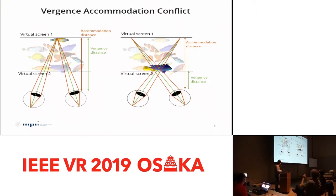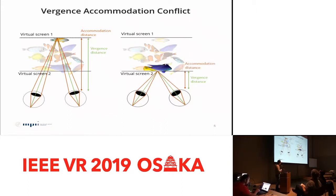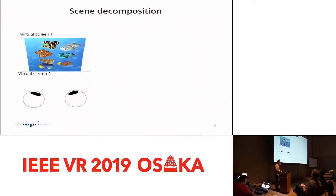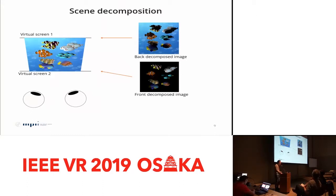One way to solve this problem is to introduce additional display screens. This kind of display architecture is called multi-plane displays. Once you have an additional display screen, the user can focus at multiple depths without any problem. Studies show that multi-plane displays can project volumetric images and trigger accommodation between two display planes so that users can focus at any arbitrary depth. Achieving this volumetric image projection requires finding proper decomposed images — a process called 3D scene decomposition, which is the main focus of our paper.